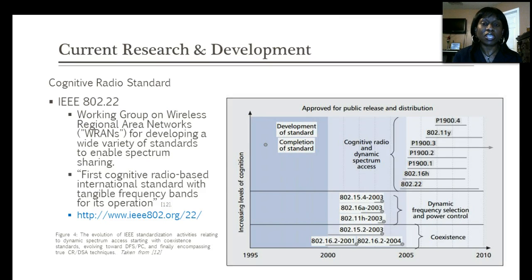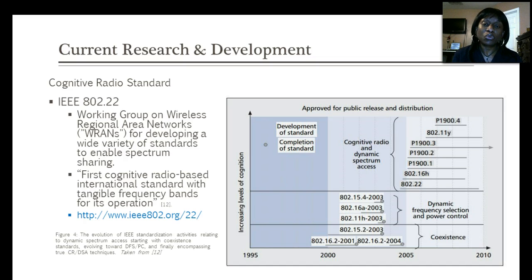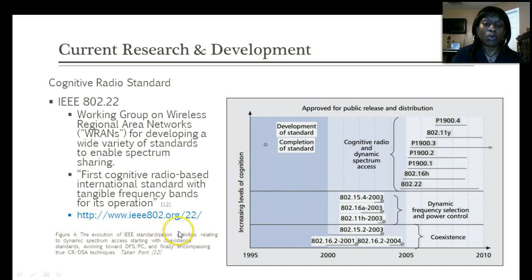There has been a lot of research and development in cognitive radio. A standard called IEEE 802.22 has been developed — it is a working group on wireless regional area networks for developing standards to enable spectrum sharing. The IEEE 802.22 is the first cognitive radio-based international standard with tangible frequency bands for its operation, and there are multiple projects under it such as 802.22.1, 802.22.2, as well as 802.22A, B, and C, available at www.ieee802.org.